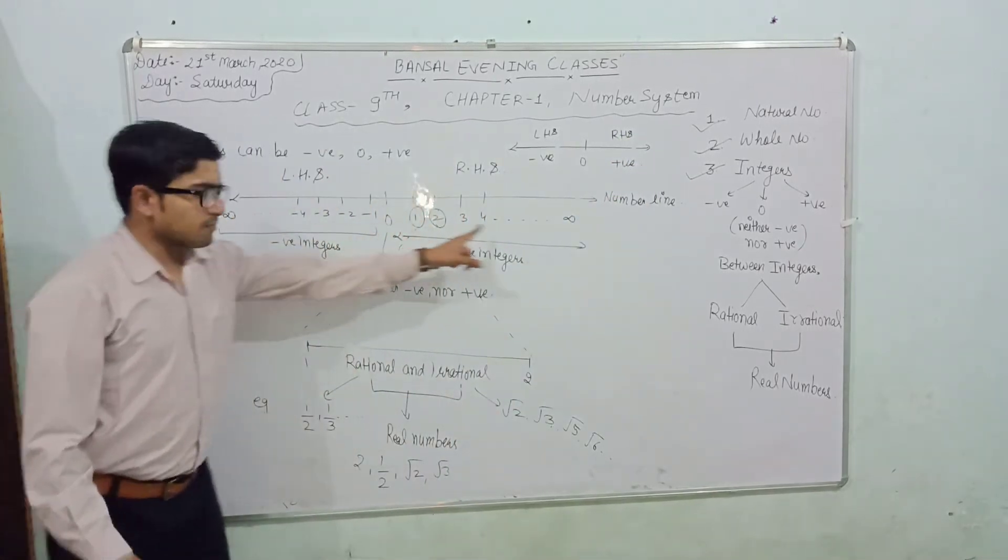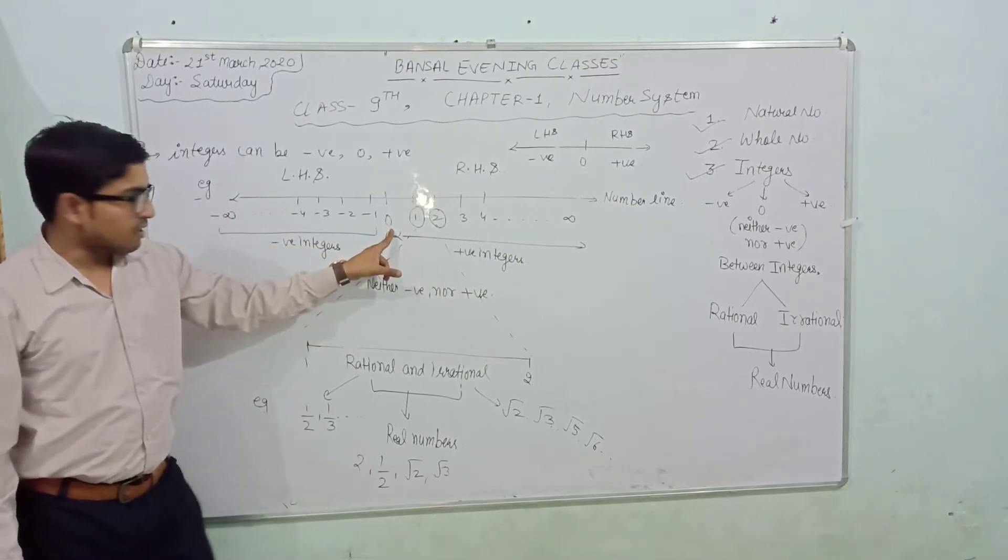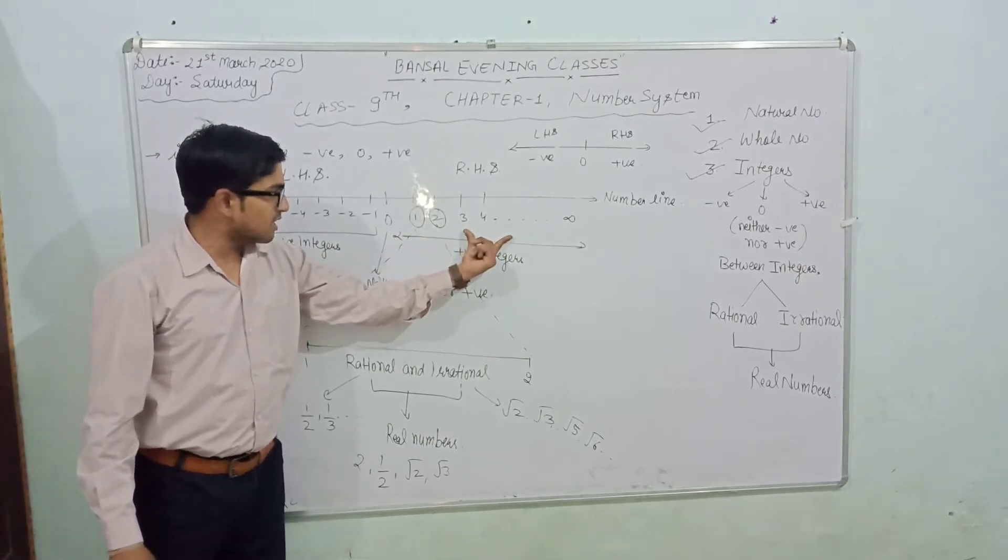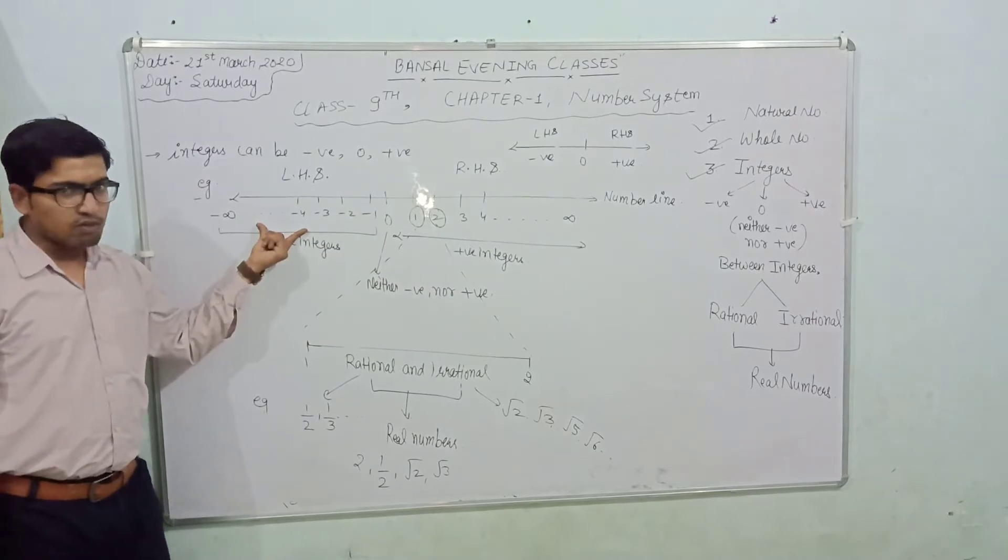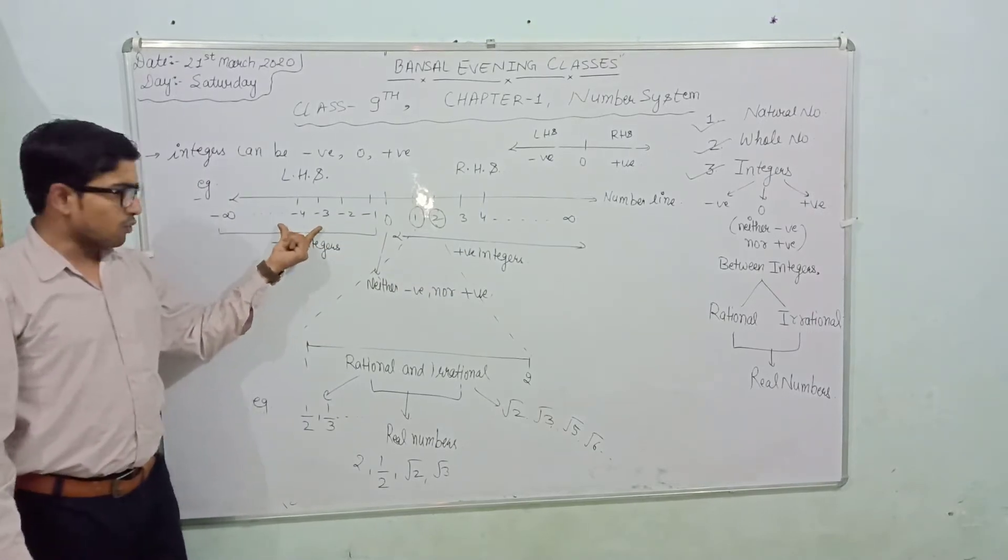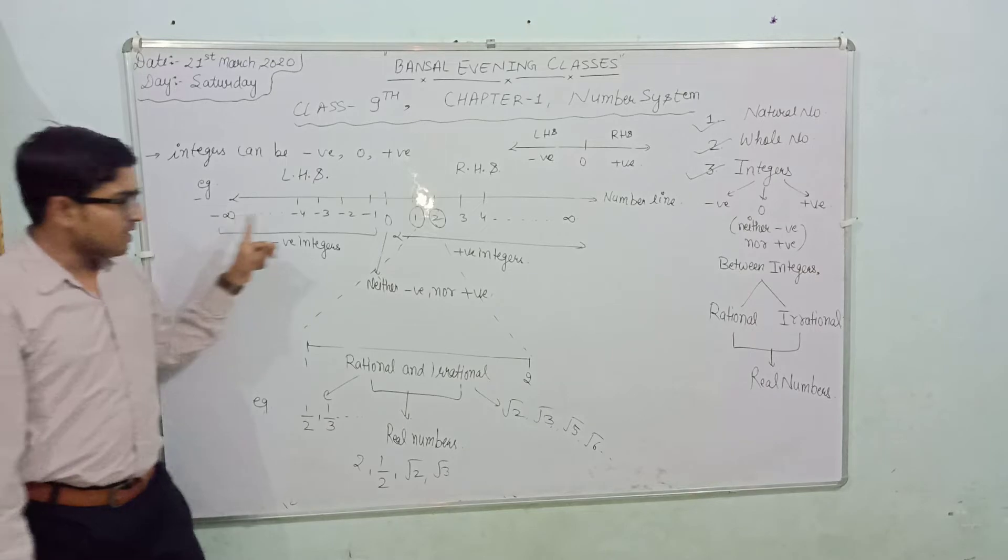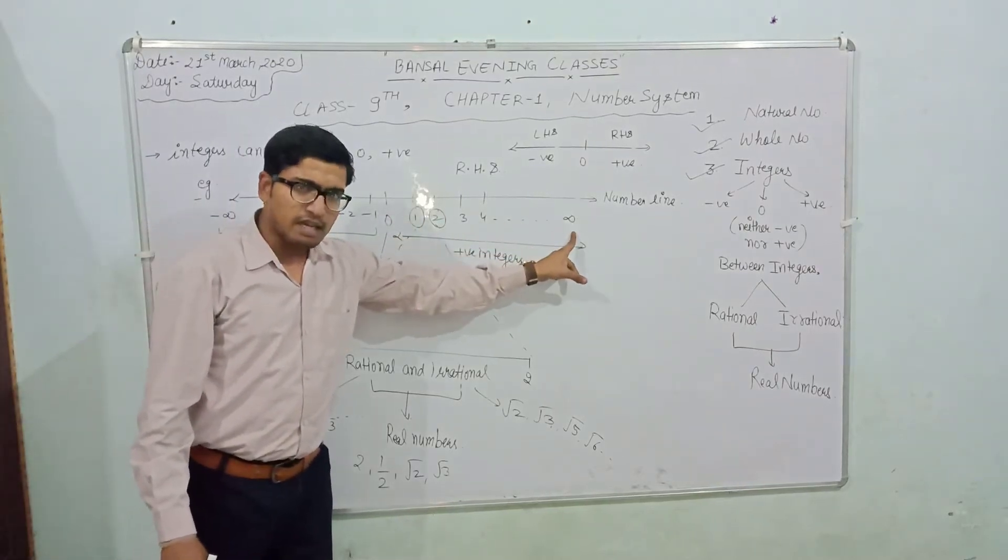This is the number line. Zero is in the middle. These are on the right side of the zero, these are on the left side of the zero. These numbers continue to minus infinity and these numbers continue to plus infinity.